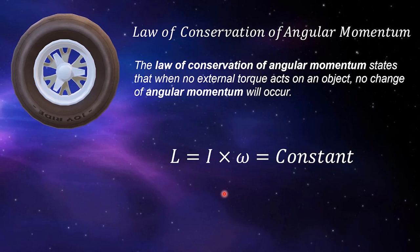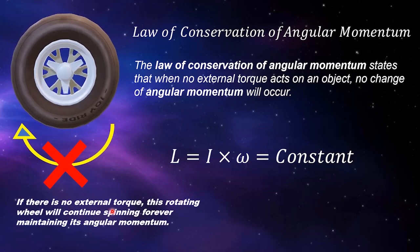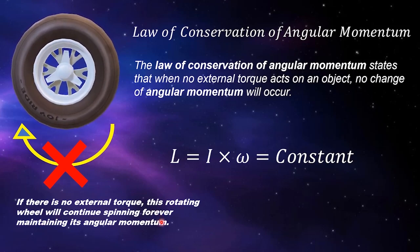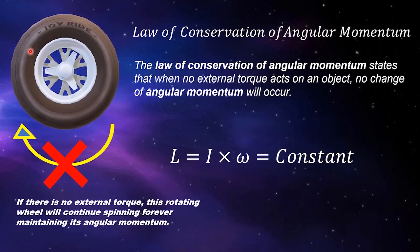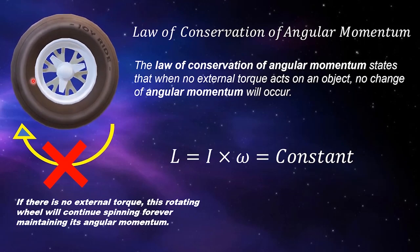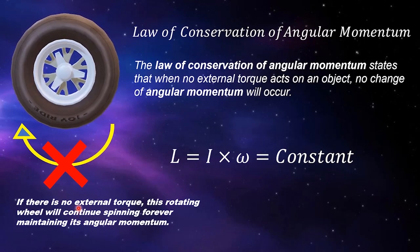Another concept to consider is the law of conservation of angular momentum: when no external torque acts on an object, there will be no change in angular momentum, so I·ω remains constant. Imagine a spinning wheel — if there is no external torque, it will continue spinning forever, maintaining its angular momentum. To stop it, you must apply an external torque, such as the brakes on a rolling truck wheel.